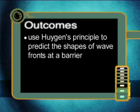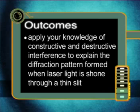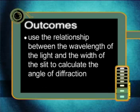By the end of this lesson, you should be able to use Huygens' Principle to predict the shapes of wave fronts at a barrier, apply your knowledge of constructive and destructive interference to explain the diffraction pattern formed when laser light is shone through a thin slit, and use the relationship between the wavelength of the light and the width of the slit to calculate the angle of diffraction.